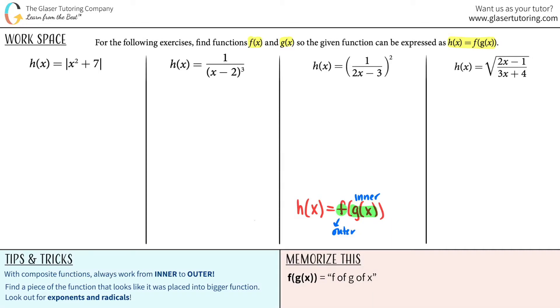Here's a quick trick. We want to find the piece of the function that looks like it was placed into a bigger function. We're going to watch out for exponents and we're going to watch out for those radicals. You think to yourself, is there anything that is trapped inside? Keyword: inside. You want to find something that is inside, trapped, with parentheses, or exponents, or radicals.